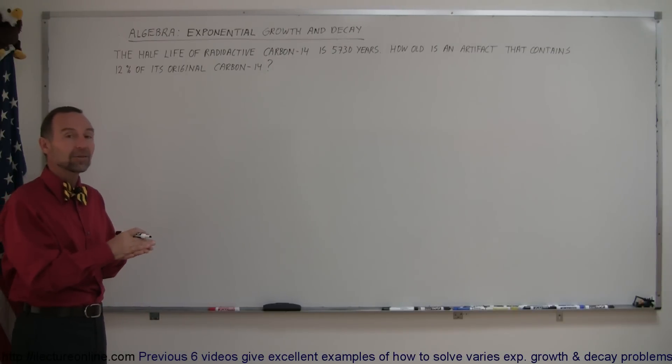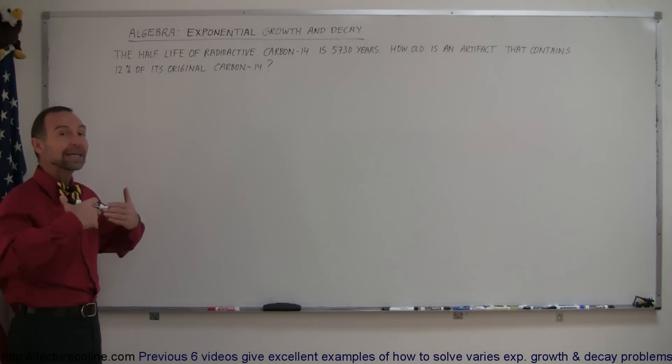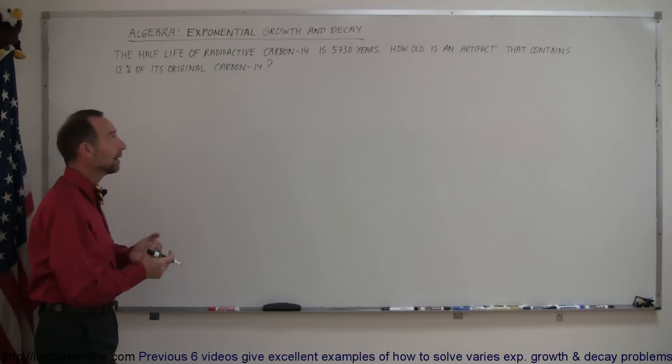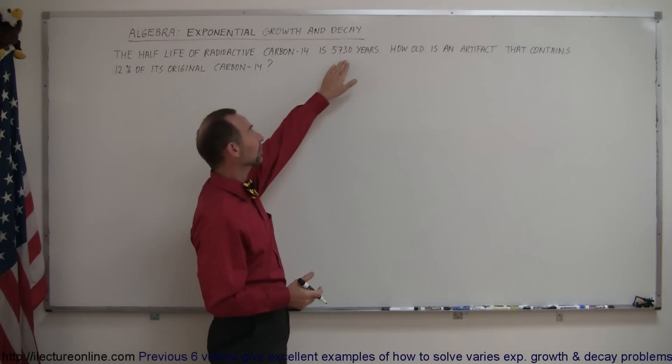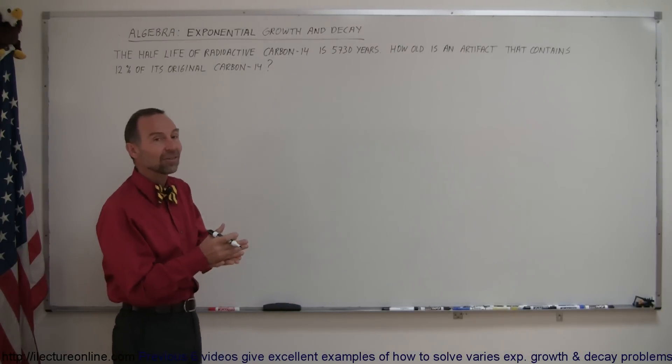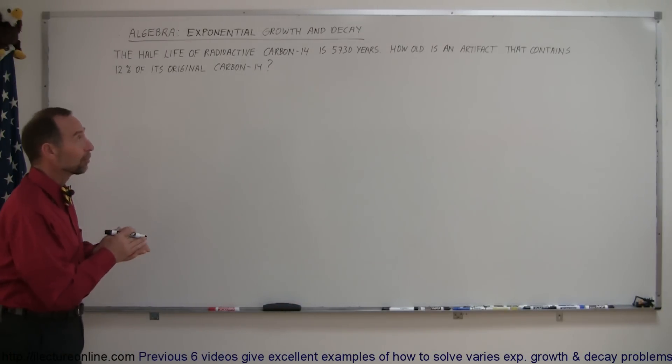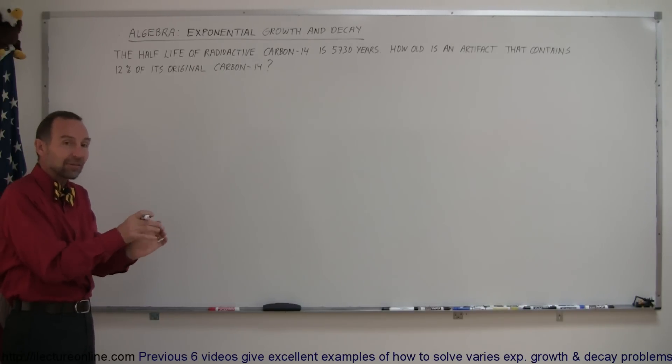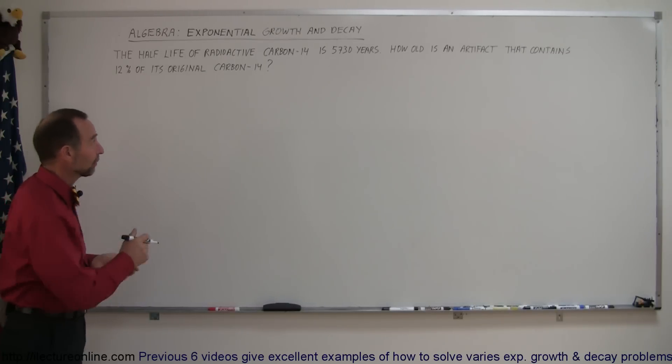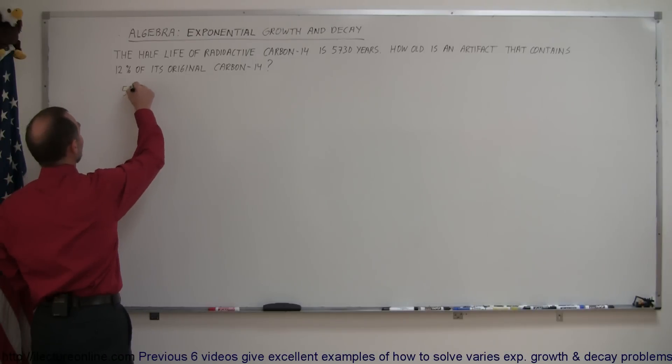So once the organism dies, the plant dies, the shell dies, the people die, the trees die, carbon-14 is no longer being replenished and then it begins to decay at a rate such that every 5,730 years, half of the existing or the pre-existing carbon-14 has decayed to something else. So after 5,730 years, just to get a feel for that,